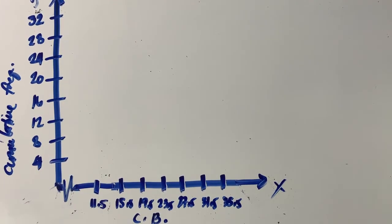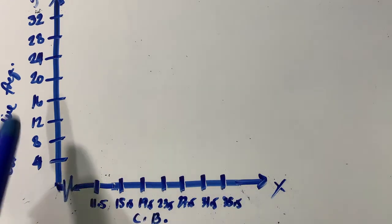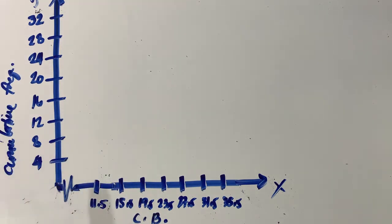Our next graph is an ogive, which is a graph of a cumulative frequency distribution plotting the upper class boundaries along the x-axis and the cumulative frequencies along the y-axis.